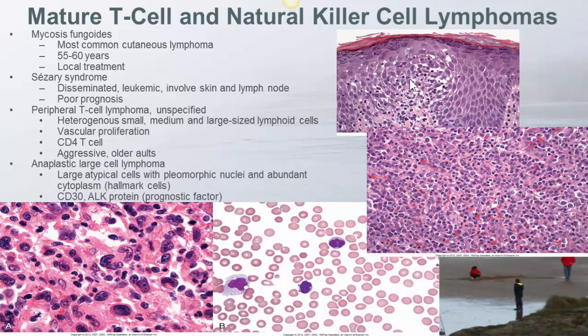Sézary syndrome also involves the skin but is much more disseminated and has a leukemic presentation. Skin and lymph nodes are involved. It is an aggressive lymphoma with poor prognosis.